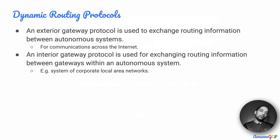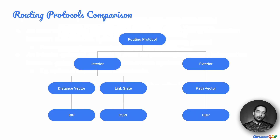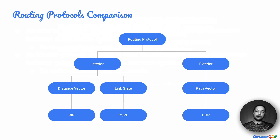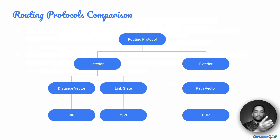With this information, let's figure out which of the given options are interior gateway protocols and which are exterior routing protocols. The ones that come under interior will be RIP and OSPF, which use different protocols to do this. Whereas the exterior protocol in our list is BGP — the border gateway protocol.